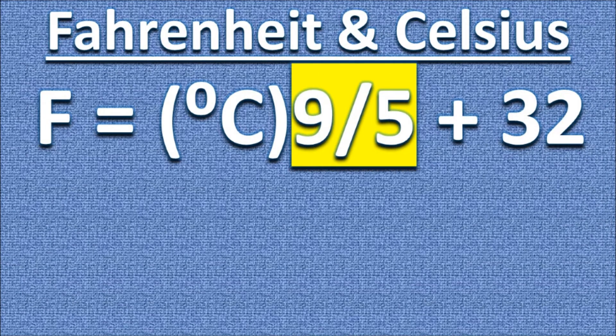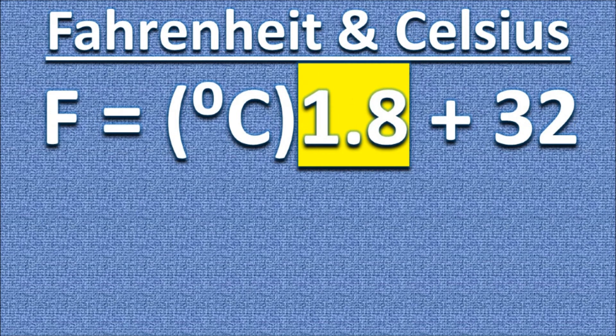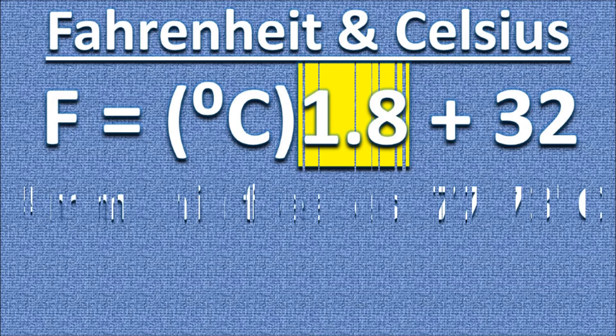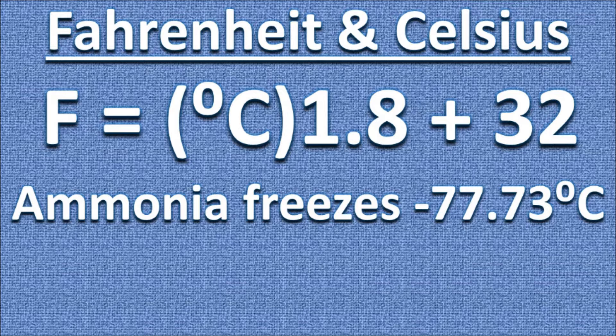Let us remove the fraction in our formula and make it 1.8. Our next example will use ammonia, which is a naturally occurring compound that does not freeze until it reaches negative 77.73 degrees Celsius.